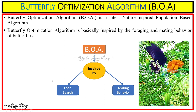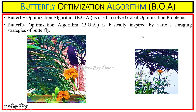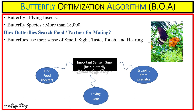The Butterfly Optimization Algorithm is the latest nature-inspired, population-based algorithm inspired by the foraging and mating behavior of butterflies. It is inspired by the various foraging strategies used by butterflies in the real world, and we can use this algorithm to solve global optimization problems. More than 18,000 butterfly species are found. Butterflies search for food or a mating partner using their senses of smell, sight, taste, touch, and hair. The most important sense is smell, which helps butterflies find food sources such as nectar, find suitable places for laying eggs, and escape from predators.